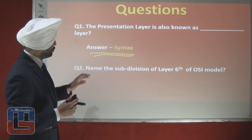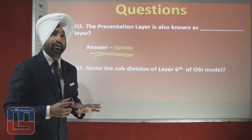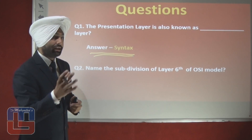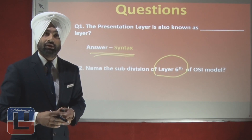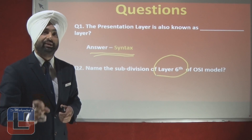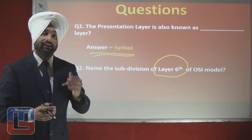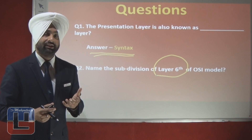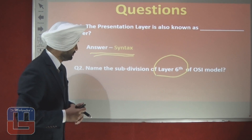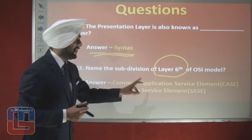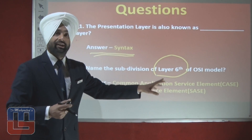The second question: name the subdivisions of Layer 6 of the OSI model. First, Layer 6 is the presentation layer. The subdivisions of the presentation layer are CASE — Common Application Service Element — and SASE — Specific Application Service Element.